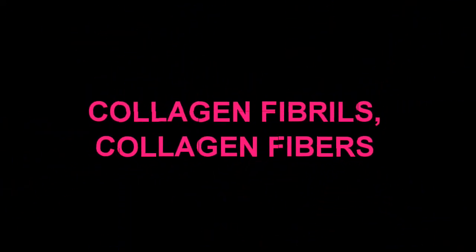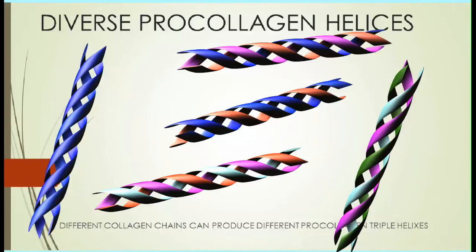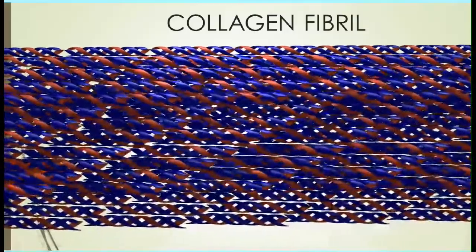In different tissues, different forms of collagen proteins are produced, depending on which genes were used to synthesize the collagen polypeptides, which were assembled into the triple helices.